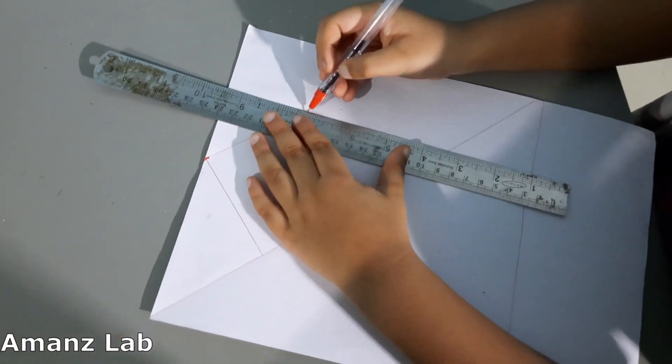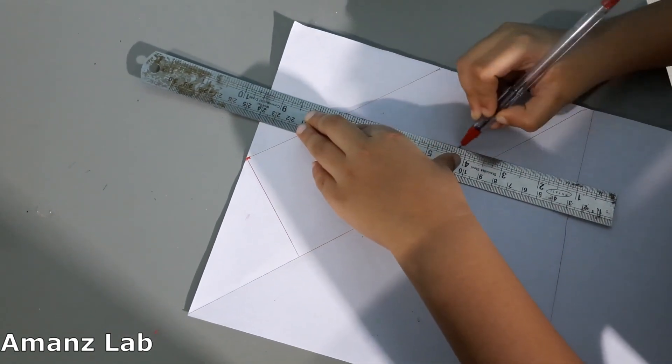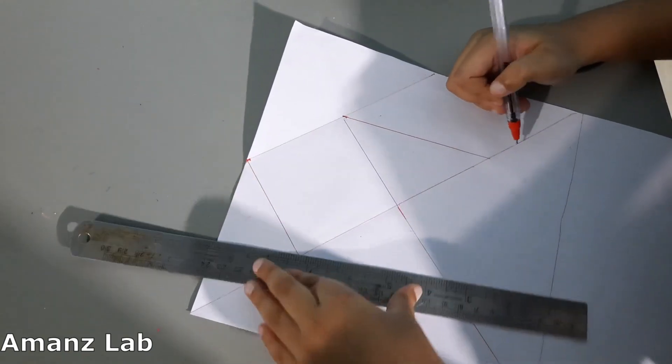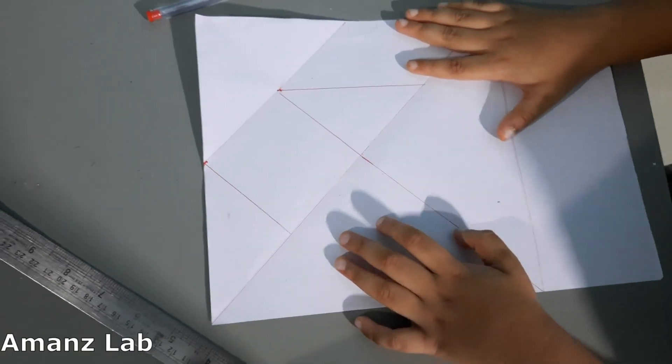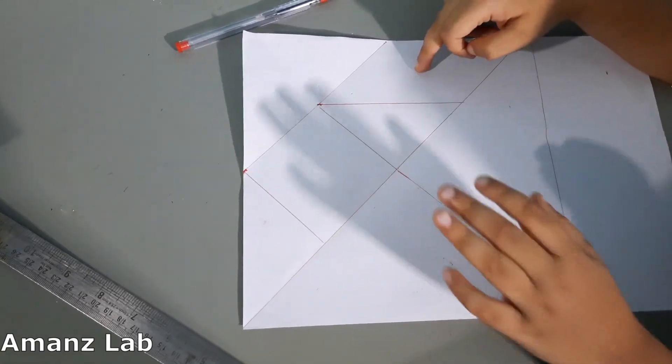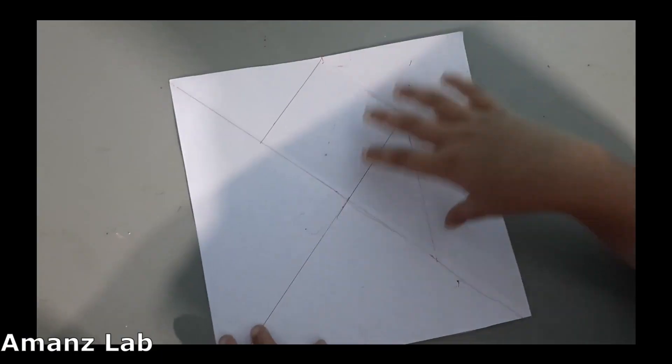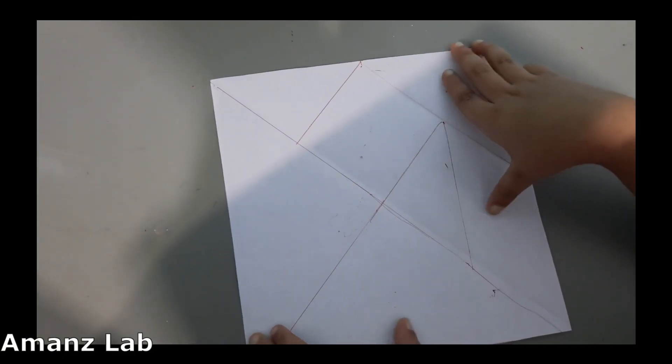Now we have to draw a line from here. Now we got two triangles, one square, one parallelogram. So now our seven shapes are ready. Now let us keep this aside.